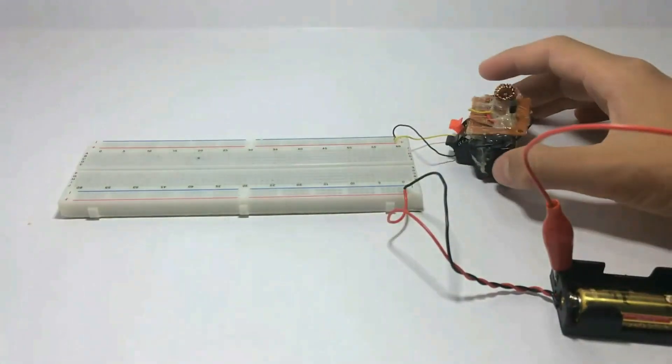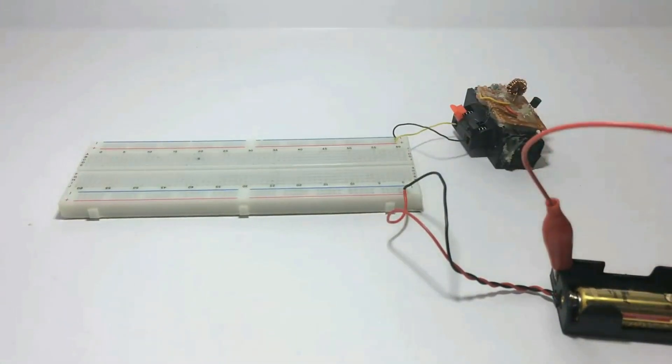As you can see here, a 1.5 volt battery can't run an LED because LEDs need at least 3 volts.